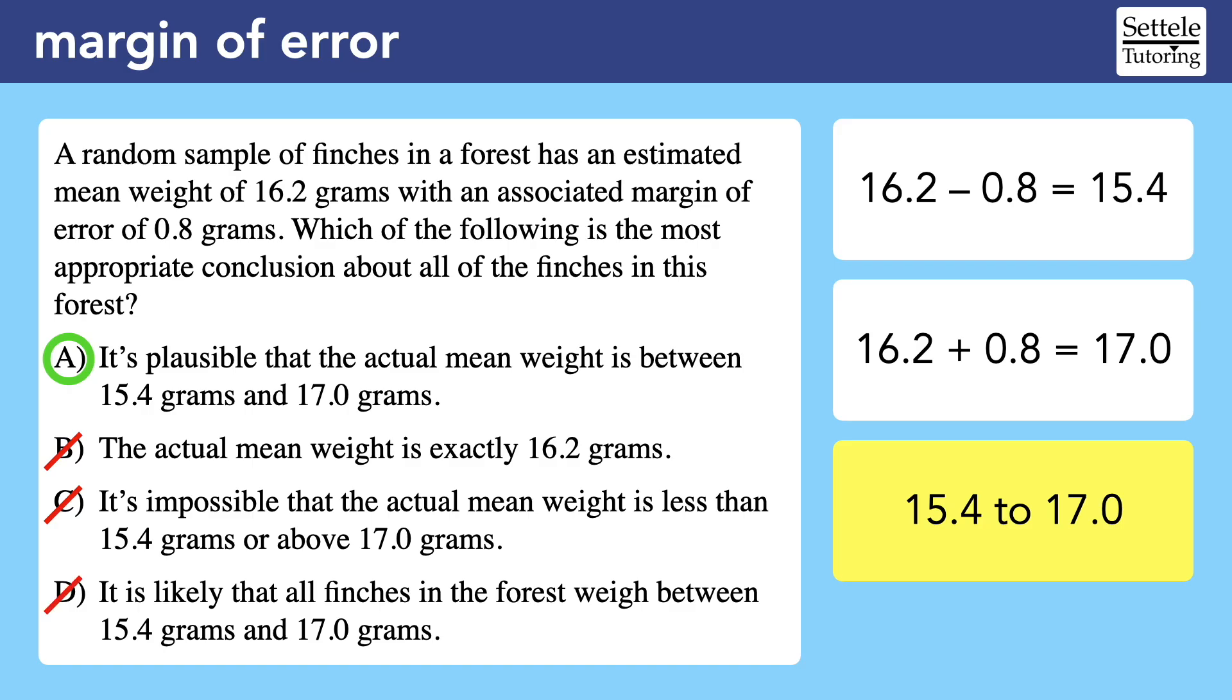Choice D is wrong because it misunderstands what we're calculating. The 15.4 to 17.0 interval is likely values for the mean or average weight of the finches. It's definitely possible that there are some really fat finches out there that weigh more than 17 grams, but we know nothing about the individual data points in this population. We were only interested in the average of those points. It's still very likely that there are data points that are greater than and less than our average.